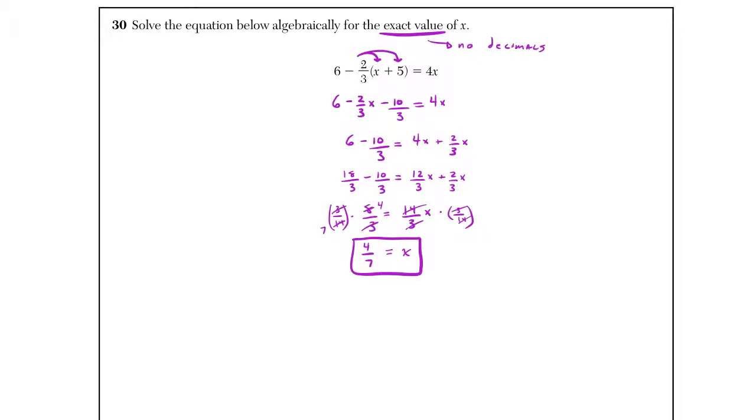So we start off solving by distributing. Whenever I have variables on both sides, I like to move them to one side. Notice I got a common denominator. Once I moved the 2 thirds over, I added it as well. And then I wrote 4 as 12 thirds, which I can now combine with the 2 thirds. 12 thirds plus 2 thirds is 14 thirds. With my constant terms on the left, I got a common denominator of 3. I got 8 thirds.